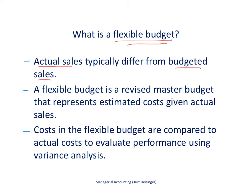The flexible budget looks at this after the fact. It takes the actual sales and multiplies them by the budgeted cost per unit — that is our flexible budget. So the flexible budget is based on actual sales and budgeted costs per unit, while the master budget is based on budgeted sales and budgeted costs per unit.